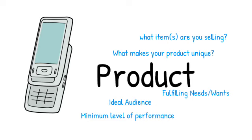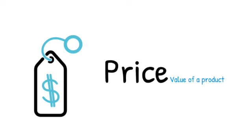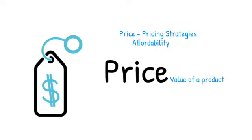Next comes the price. Price is something which decides the value of a product — what is my product's value and how much does a customer want to pay for my product? For that we generally have different pricing strategies. We read in the consumer's mind that our product is affordable. So the first point is affordability — the customer can afford our product, because we never want to give a very high price point to them.